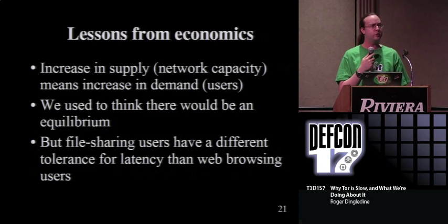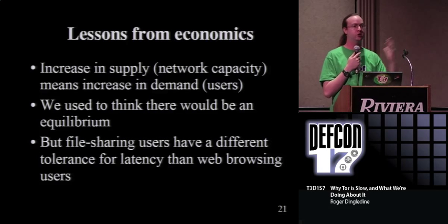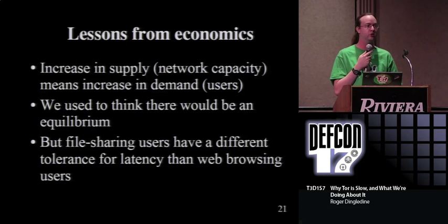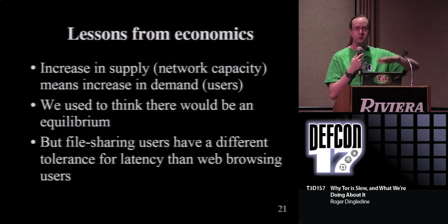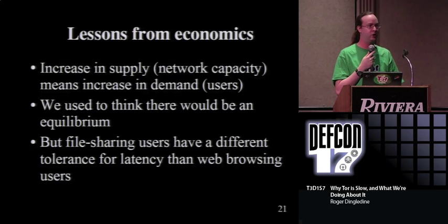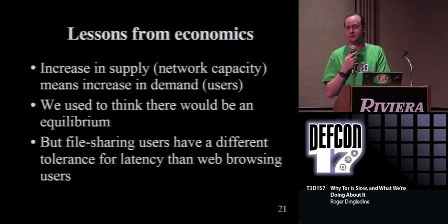There are some economic lessons here. If you increase network capacity, users will show up to take it. We used to think there would be an equilibrium - if too many users show up performance gets worse, they leave, performance gets better. But the problem is different user classes have different tolerances for latency. If you're a web browsing user, you click and want your web page to show up. If you're a file sharing user, you click and go to sleep hoping you have your DVD in the morning. And while you are asleep ruining the Tor network, there are a lot of people in Iran trying to click and they can't get their website.